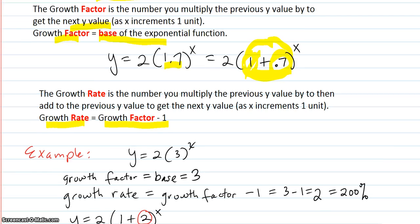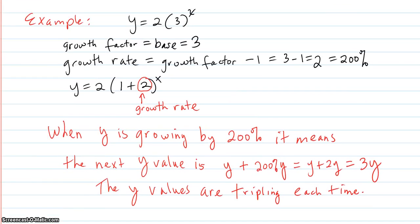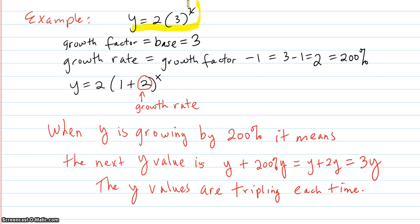Here's an example of that. Let's say you have this new function. This function triples every time x increments one. So the growth factor is the base, the growth factor is 3. Every time to get to the next y value, you hit the previous y value by 3. That's why it's the growth factor.